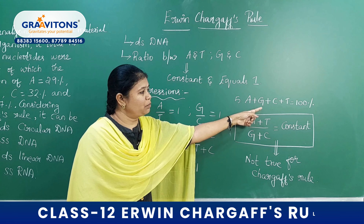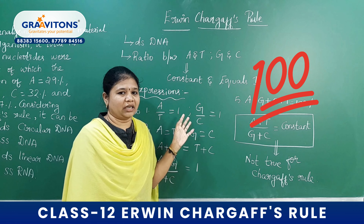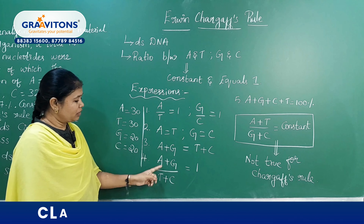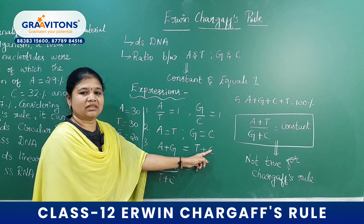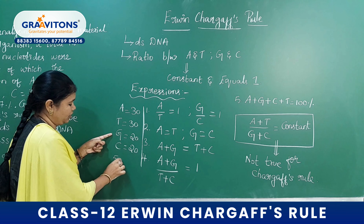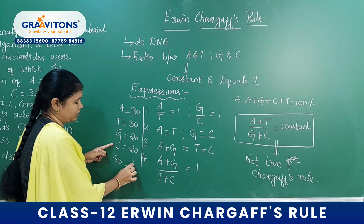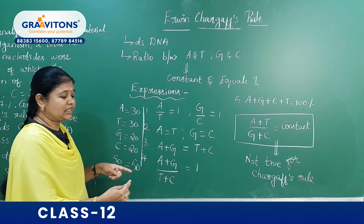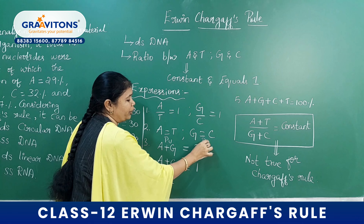A plus G plus C plus T will equal 100% of the bases in a DNA double helix. Expression number 3: A plus G will be equal to T plus C. Using our values, A plus G equals 50 and T plus C also equals 50. The same thing can also be stated in words: purines will be equal to pyrimidines.